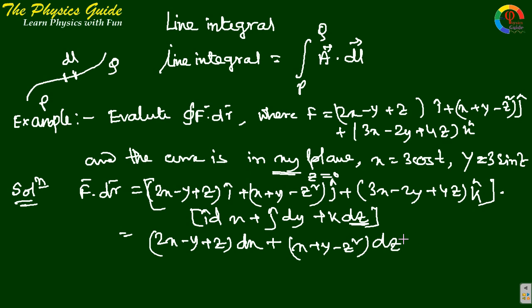In the xy-plane, z = 0, so dz = 0. This simplifies to (2x - y)dx + (x + y)dy. Now we need to integrate this expression.